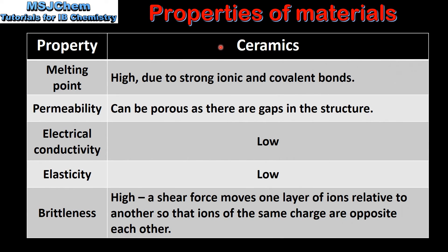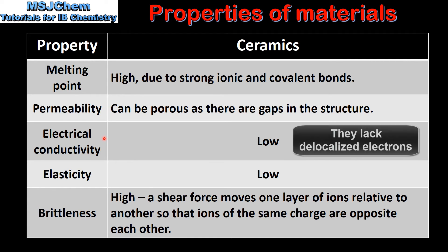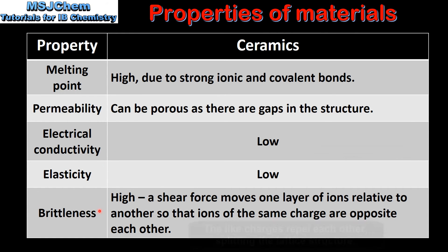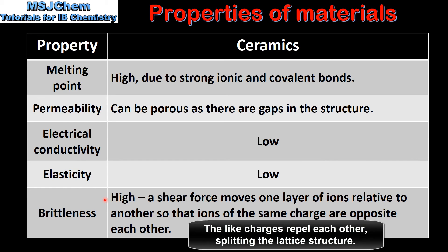Next we have ceramics. Ceramics have high melting points due to the strong ionic and covalent bonds. They can be porous as there are gaps in the structure. The electrical conductivity and the elasticity of ceramics are both low. Brittleness is high as shear force moves one layer of ions relative to another so that ions of the same charge are opposite each other.